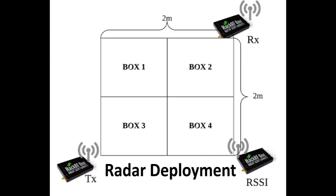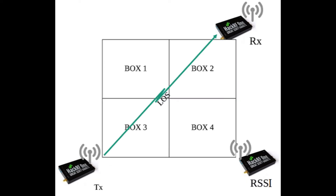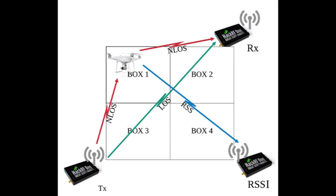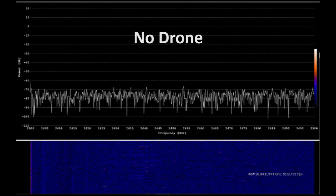This project uses three HAC RF-1 units to create the radar system, deployed in a 2x2 grid of 2 meters in length. The transmitter and receiver are placed apart to create the bi-static radar. When there are no drones, the radar detects the line-of-sight (LOS) transmissions from the transmitter to the receiver.